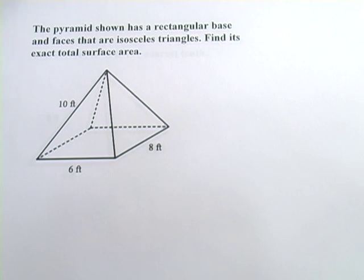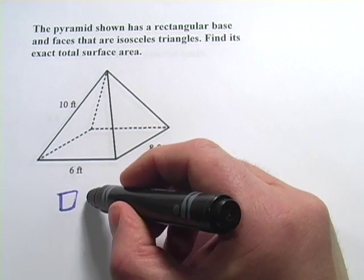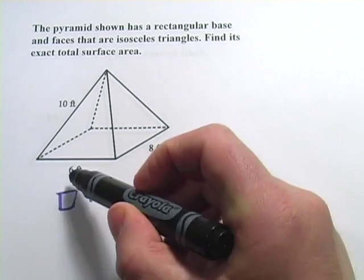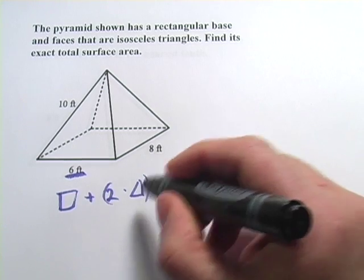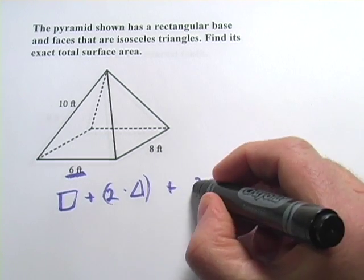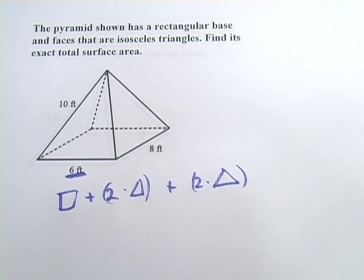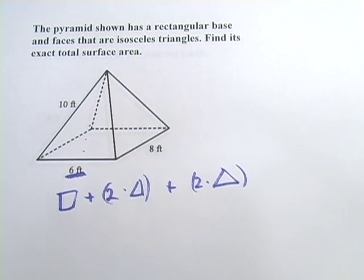This one's pretty similar. Again, we're going to have our square. We're going to have two of our triangles with the base of six. And we're going to have two of the triangles with the base of eight. And once again, we'll need to figure out the heights for these triangles so that we can figure out the area.